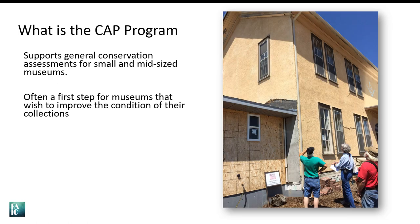The CAP program is administered by the Foundation for Advancement in Conservation under a cooperative agreement with the Institute of Museum and Library Services. It is designed to help small and mid-sized museums by providing funding support for a general conservation assessment. CAP is often a first step for small institutions that wish to improve the condition of their collections and develop long-range preservation plans.